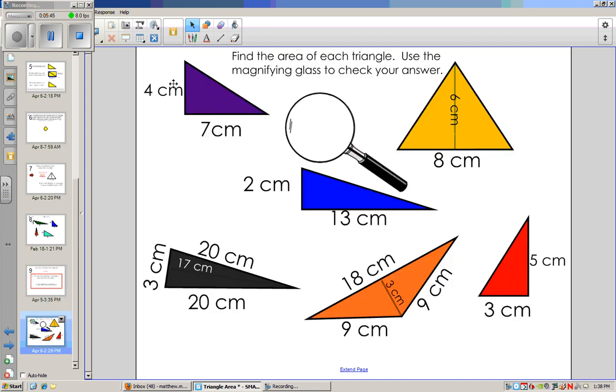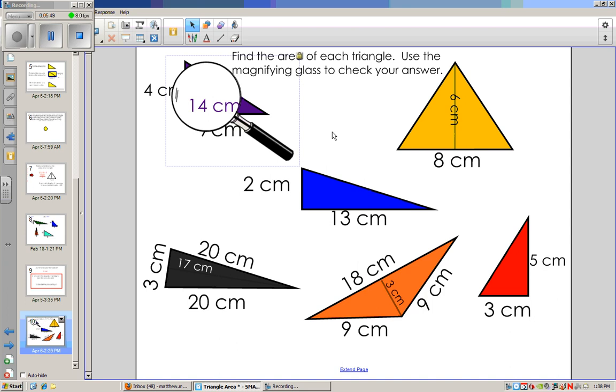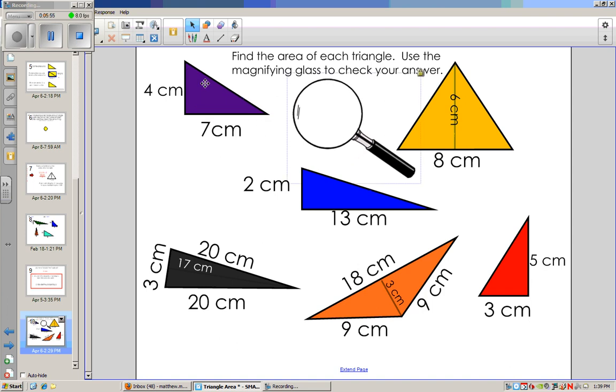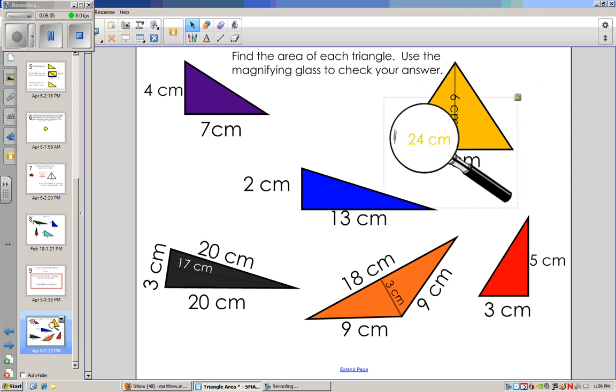So let's look at some examples. Four times seven. Well, if I did four times seven, I get 28. But then I divide by two, I get 14. If I look at another example over here, I have eight times six. You can see where the height is here. Eight times six, well, what is eight times six? Eight times six is 48. Then we divide by two and we get 24 centimeters squared.